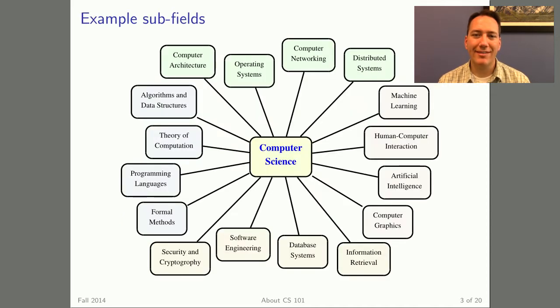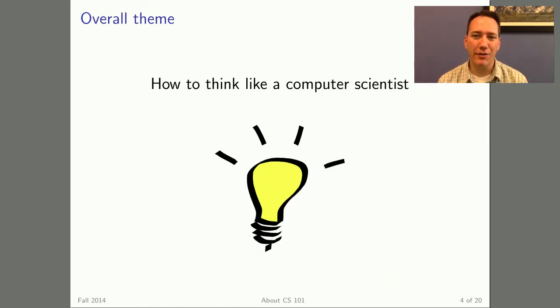Here are some of the active areas of research in computer science. What's neat about these subfields is that they push the limits of what computers can and cannot do. Computer scientists have a unique way of viewing the world, and our goal for this course is to help you learn to think like a computer scientist.